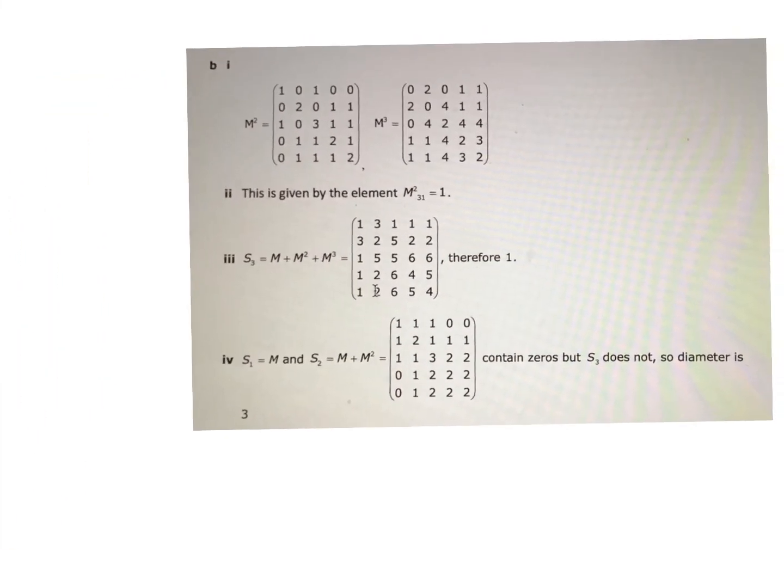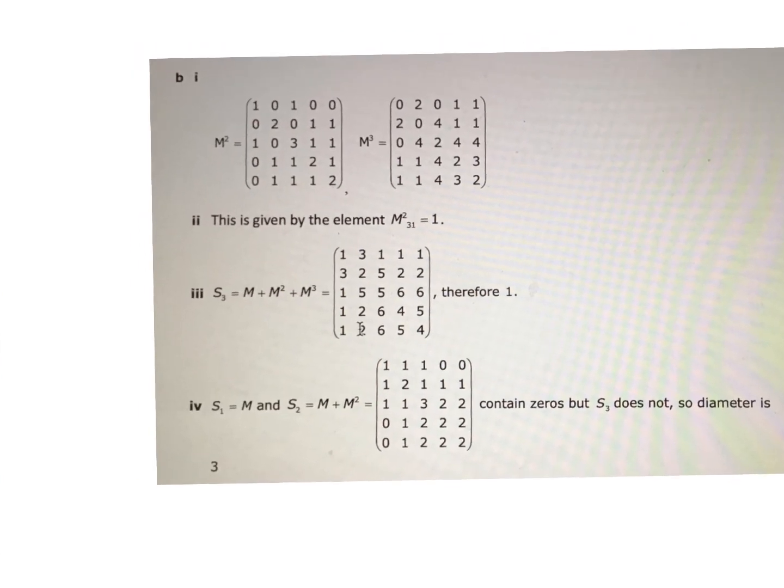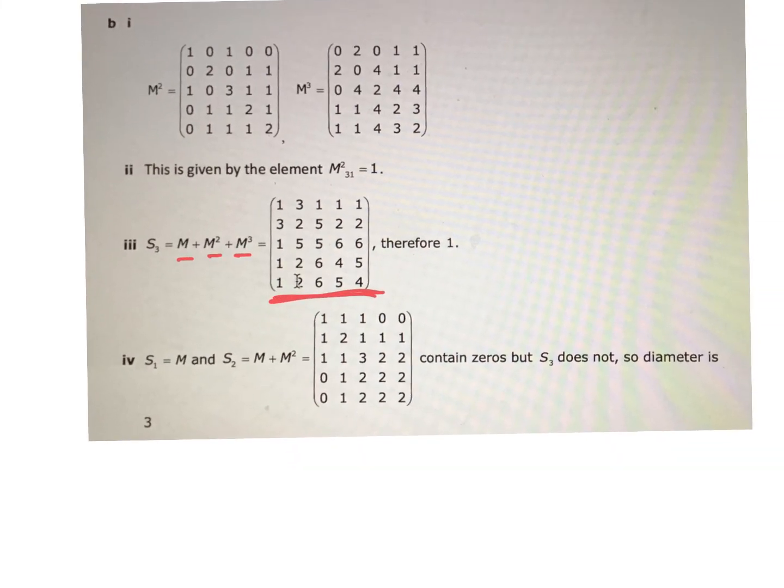For part B, this is M plus M squared plus M cubed. There are no zeros here. If I just look at M and M squared, there are still a few zeros. In this case, A and D are not connected yet, so I need to go further.